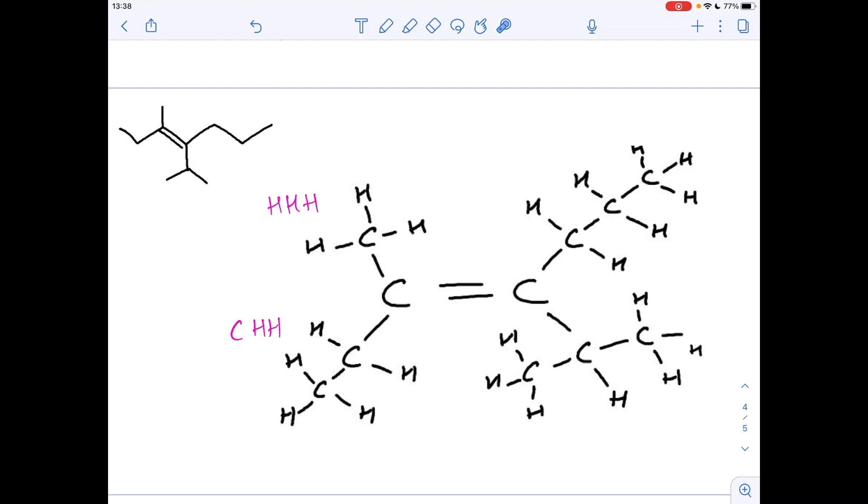Moving on to the right-hand carbon, we've got bonded to this one here, we've got H, H, and C, so it's kind of like this one here. So we've got C, H, H. On this one, on this carbon, we've got an H and two C's, so we'd write C, C, H.